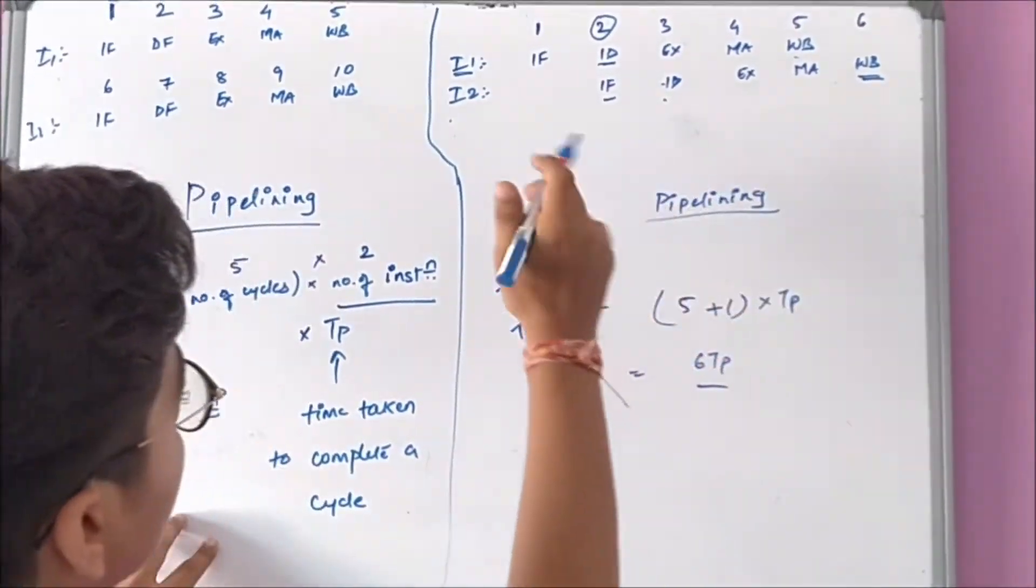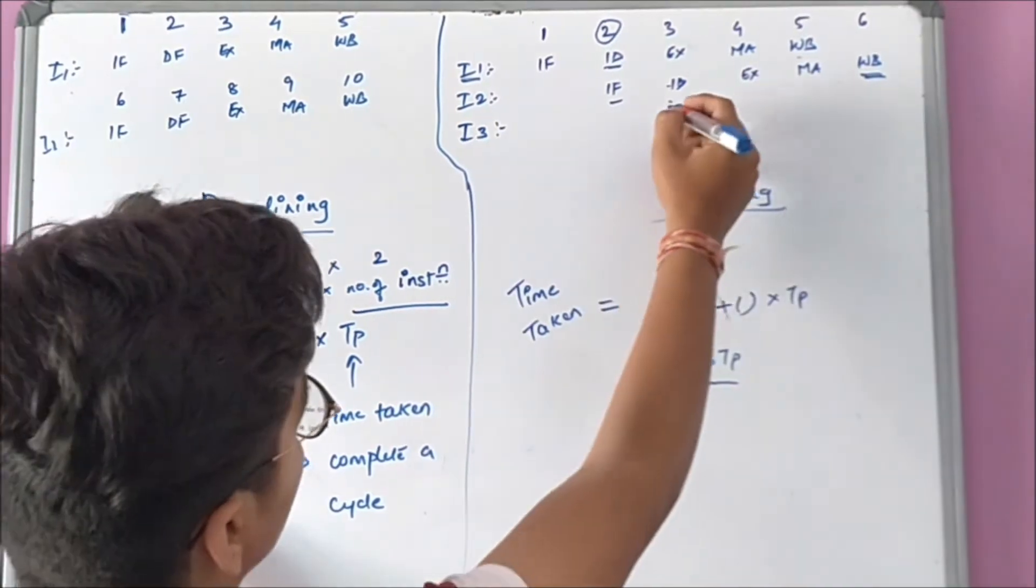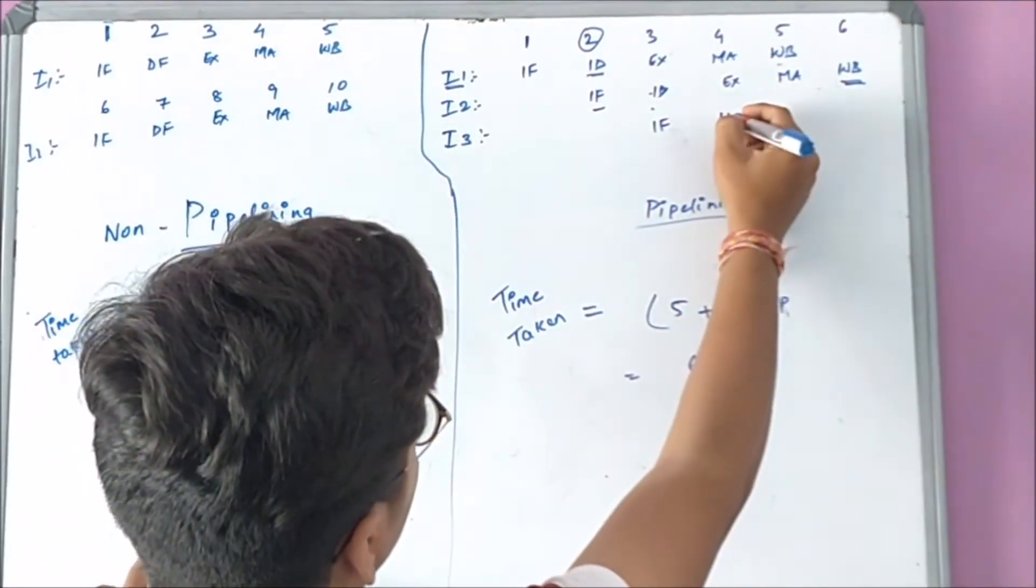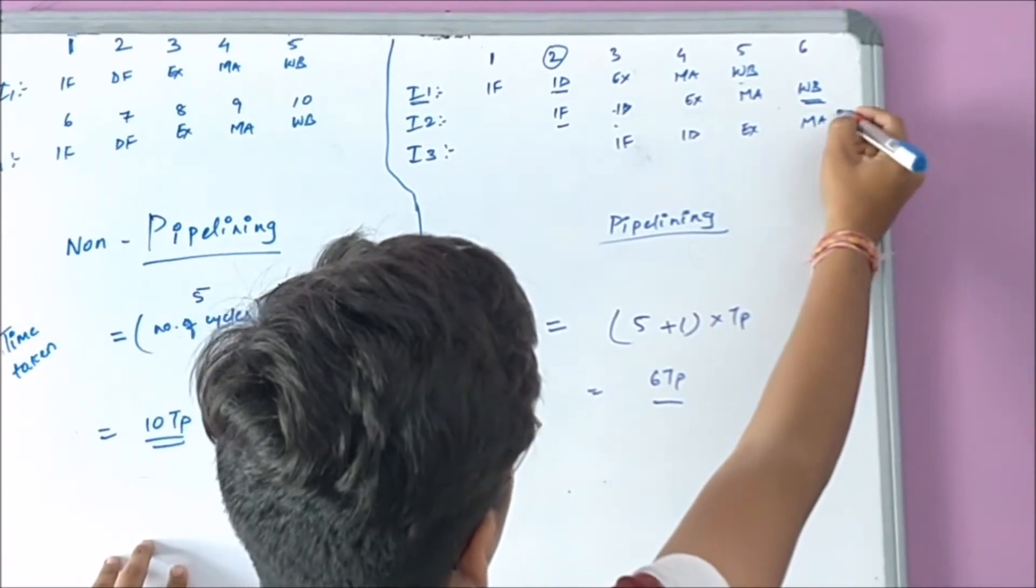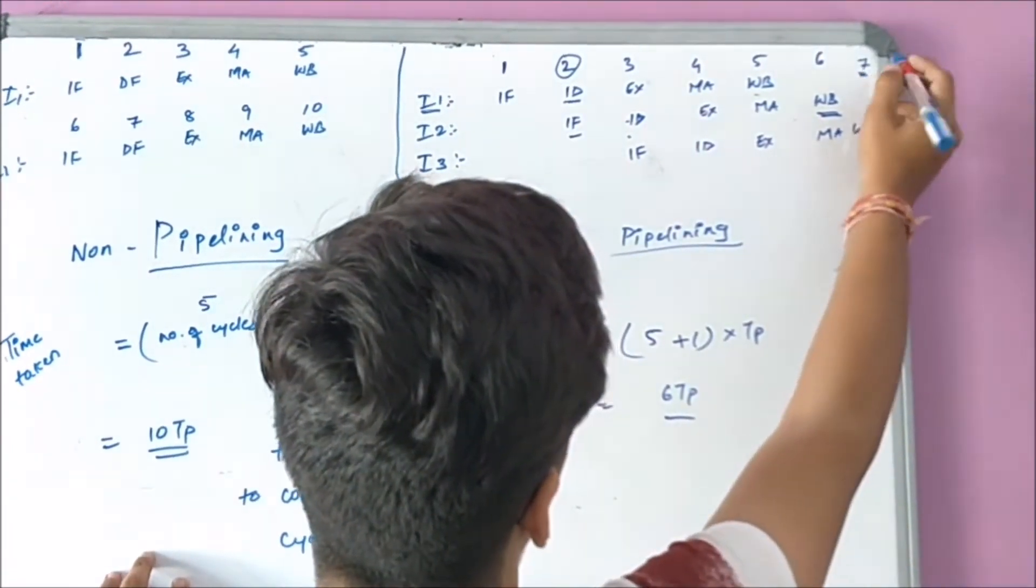If you consider I3, it will be IF, ID, AS, MA, and W. This will be the seventh cycle.